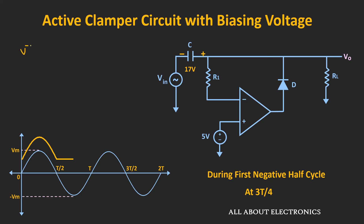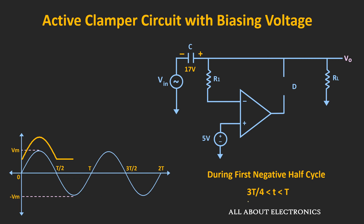At time 3T/4, the voltage V- equals Vin plus 17V. After this point, the input voltage starts increasing from minus 12V towards 0V, so V- becomes greater than 5V. For the time from 3T/4 to T, V- is greater than V+, so the op-amp goes towards negative saturation, the diode turns off, and the op-amp operates in the open-loop configuration. In this configuration, the output voltage Vout equals Vin plus 17V. If you see the output waveform during this time, it goes from 5V towards 17V.